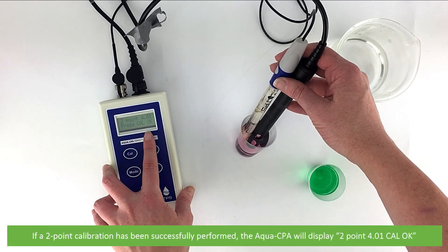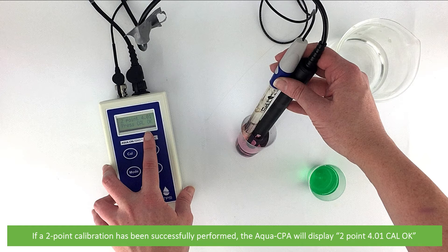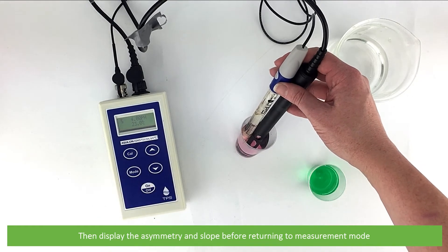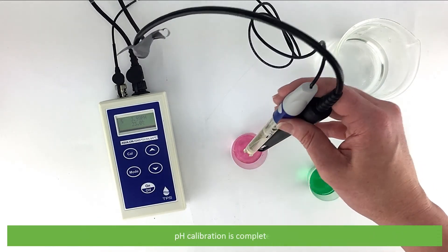Once the two-point calibration has been successfully performed, the Aqua CPA will display 2.4.01 CAL OK. Then it will display the asymmetry and slope before returning to measurement mode. pH calibration is complete.